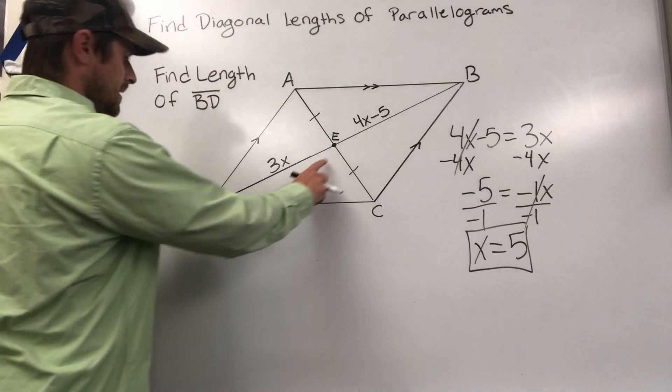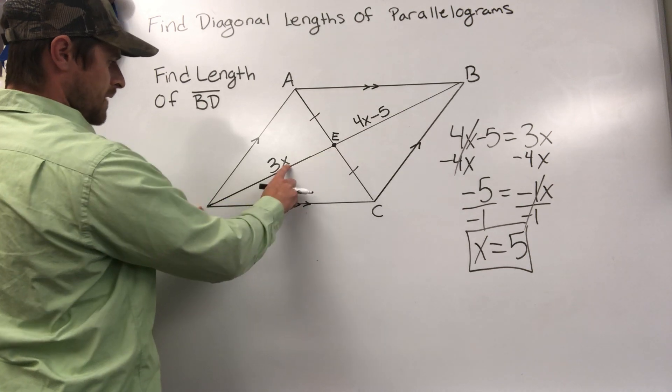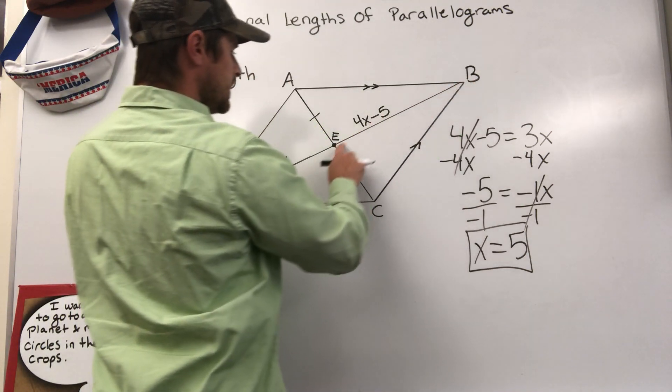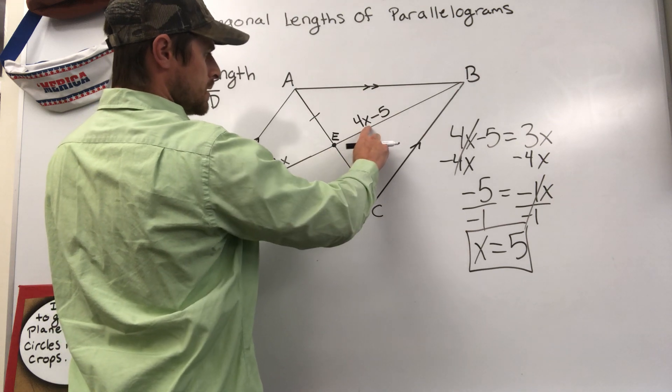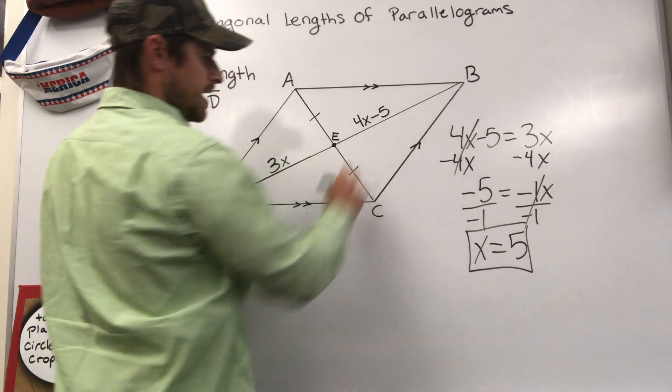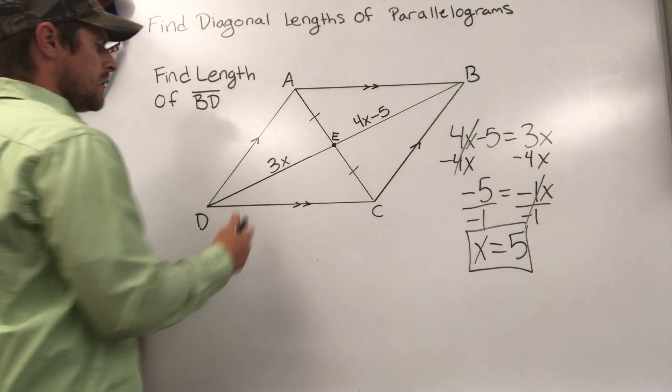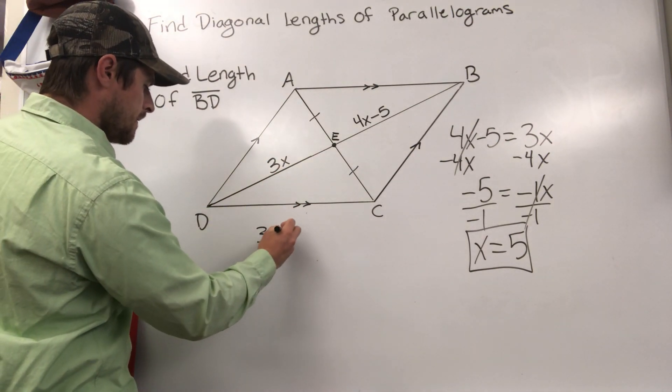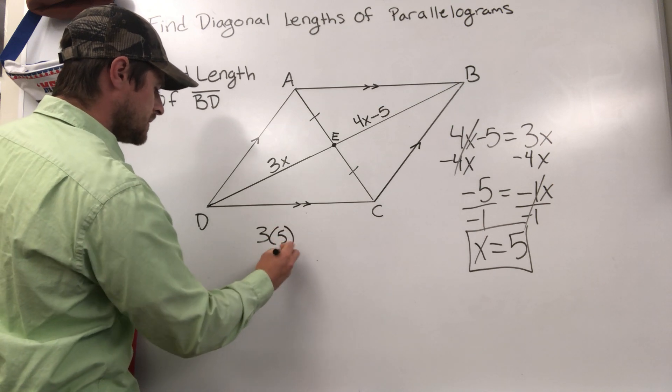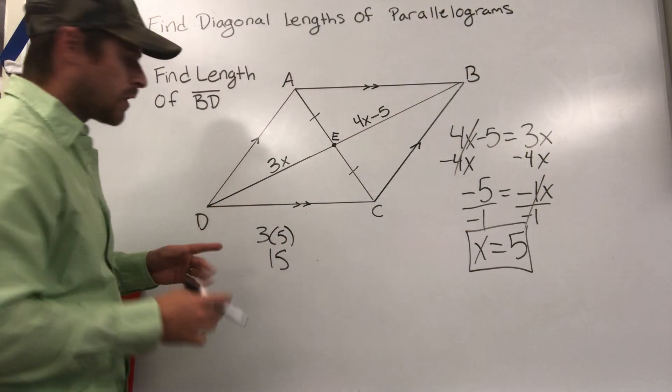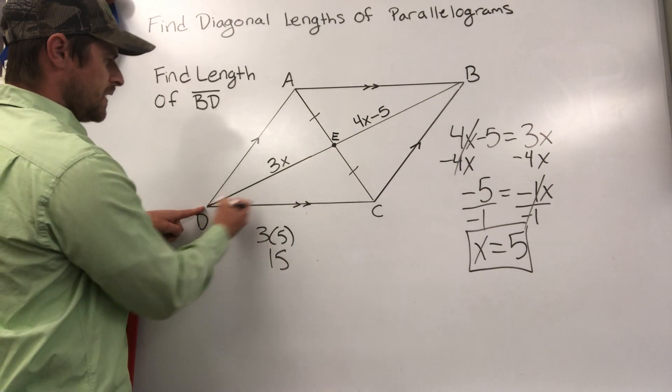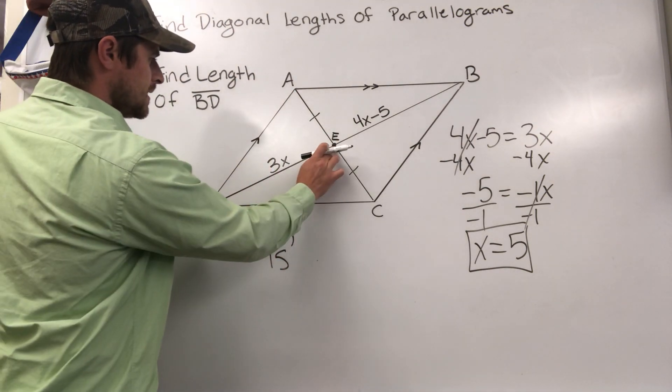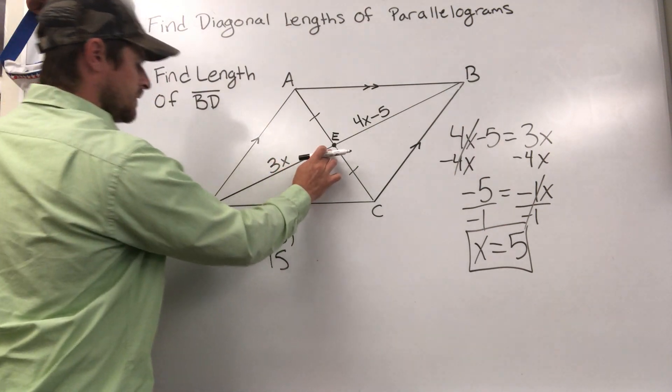So what we need to do to figure out the length - if you're asked to find DE, just say 5 times 3 or 3 times 5. If you're asked to find BE, 4 times 5 minus 5. Remember x is 5, so we're just going to plug that in. So let's plug it into this one, quick and easy: 3 times 5 gives me 15. Therefore DE is 15. Let's say our unit of measure is inches. This would be 15 inches.